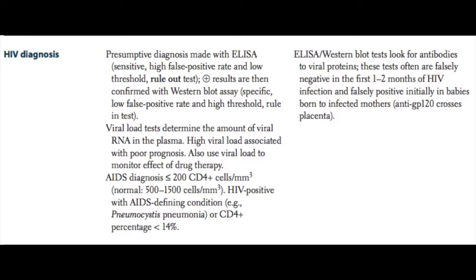HIV PCR and viral load tests are increasing in popularity. They allow the physician to monitor the effect of drug therapy on viral load and are also used diagnostically. AIDS is diagnosed when there are 200 or fewer CD4-positive T cells in a person's serum — a normal person has about 500 to 1500. The AIDS label is also given to HIV-positive individuals with an indicator condition such as pneumocystis pneumonia or a CD4-to-CD8 ratio less than 1.5.